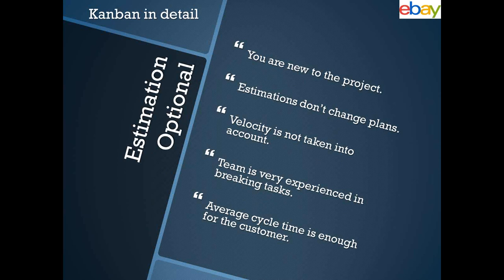Another strategy in Kanban is that estimation is optional. There are many cases in software where you have to estimate and give a release timeline for new features. You can opt for estimation being optional when you are new to the project and can't estimate properly, when your estimations don't change the plan or aren't critical at a particular time, when you don't need to measure velocity, when the team is experienced enough to know they can complete any task in one or two days, and when the average cycle time is sufficient for the customer with no hard deadlines.